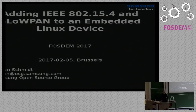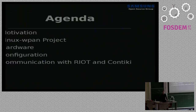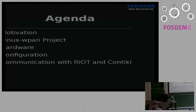Hello everybody, great to see quite a few people here — I was somehow expecting most of you are already on the way back. I will talk about 802.15.4, the wireless protocol, and also about 6LoWPAN, which is an adaptation layer. I'll start with a little bit of motivation, then go into the details of the Linux WPAN project — the kernel side and user space side.